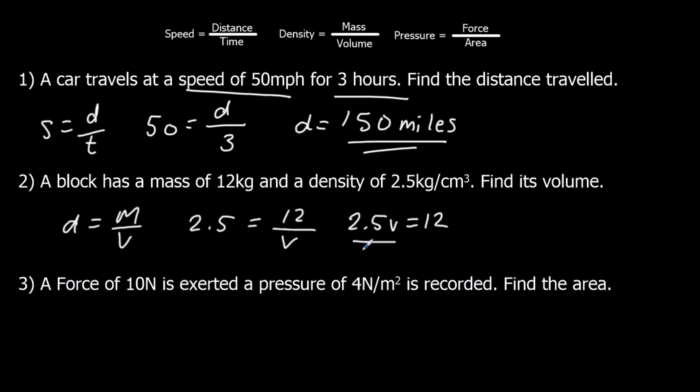I'm going to divide by 2.5. So 12 over 2.5, I'll double it first. V equals 12 over 2.5, which is 24 over 5. It's 4 whole ones and 4 fifths, 4.8. And that's in centimeters cubed.